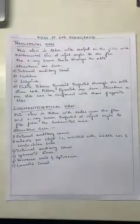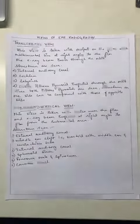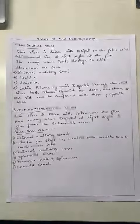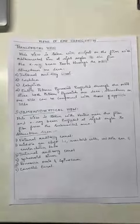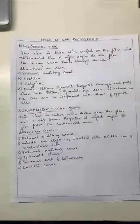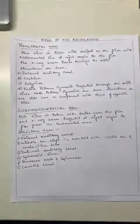The other is the submental vertical view. For the transorbital view, this view is taken with the occiput on the film, with the orbitomeatal line at right angles to the film. The x-ray beam passes through the orbit.